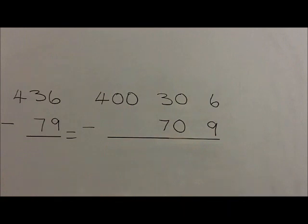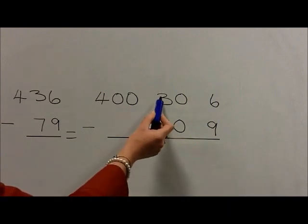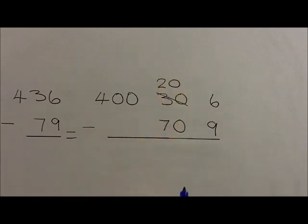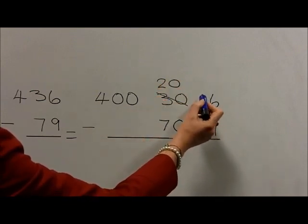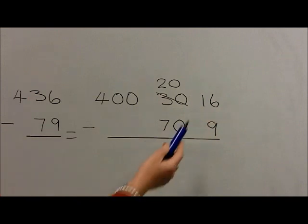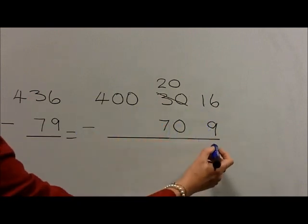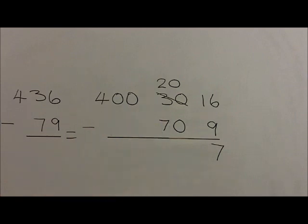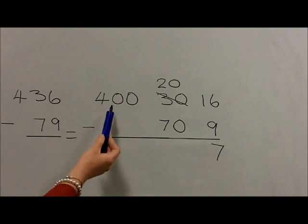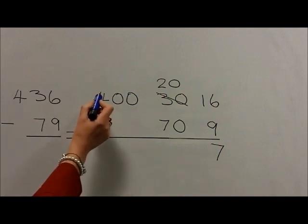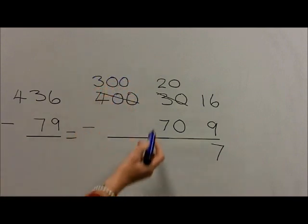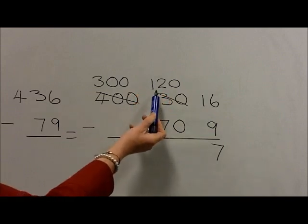As this subtraction would lead to a negative number, we borrow from the 10s. The 30 is reduced by 1 ten to become 20, and the 1 ten is then added to the units so the 6 becomes 16. We now do 16 take away 9, which gives us 7. We then move on to the 10s column and do 20 take away 70. Once again, this would lead to a negative number, so we borrow from the 100s column. The 400 is reduced by 100 to become 300, and the 100 is then added in front of the 10s so that we have 120.